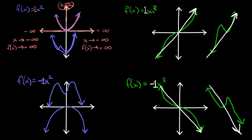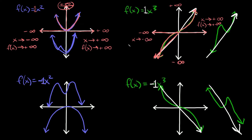For the cubic function f(x) = x³, as x approaches positive infinity, the function is curving up towards positive infinity also, so the function approaches positive infinity. Now on the other side, when x is approaching negative infinity, the function is sloping down towards negative infinity. So as x approaches negative infinity, the function is also approaching negative infinity.